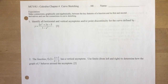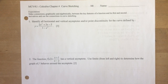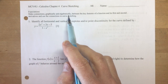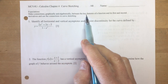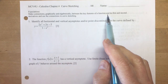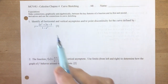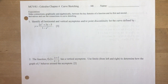Chapter 4 Test on Curve Sketching. In this unit you would have learned how to make connections graphically and algebraically between the key features of a function and its first and second derivatives, and use those connections in curve sketching.